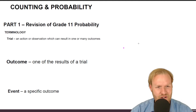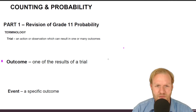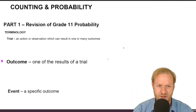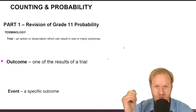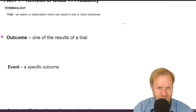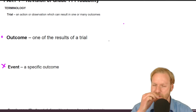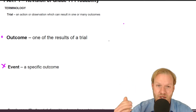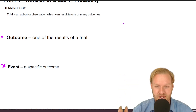An outcome is one of the results of a trial — maybe you play hockey, soccer, or swim, or it's heads, or if we're tossing the coin twice it was heads and heads. An event is a specific outcome, and these two are very similar. An event might be 'an even number' as opposed to one particular number.